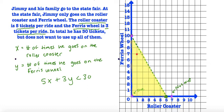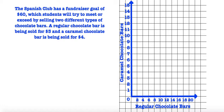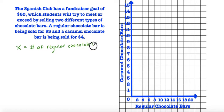And that's it for this problem. Here we have another problem and it reads: the Spanish club has a fundraiser goal of $60, which students will try to meet or exceed by selling two different types of chocolate bars. A regular chocolate bar is being sold for $3 and a caramel chocolate bar is being sold for $4. So x represents the number of regular chocolate bars and y represents the number of caramel chocolate bars.